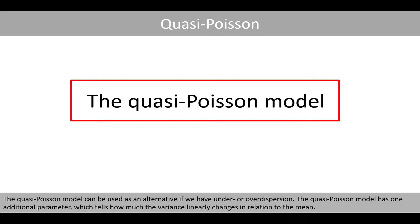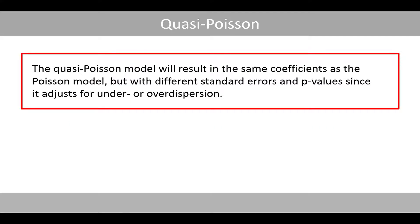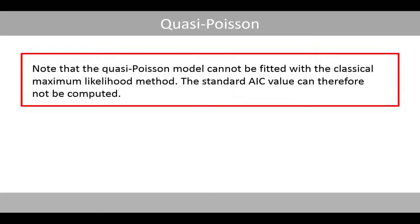The quasi-Poisson model can be used as an alternative if you have under- or overdispersion. The quasi-Poisson model has one additional parameter which tells how much the variance linearly changes in relation to the mean. The quasi-Poisson model will result in the same coefficients as the Poisson model, but with different standard errors and p-values since it adjusts for under- or overdispersion. Note that the quasi-Poisson model cannot be fitted with the classical maximum likelihood method, so the standard AIC value cannot be computed.